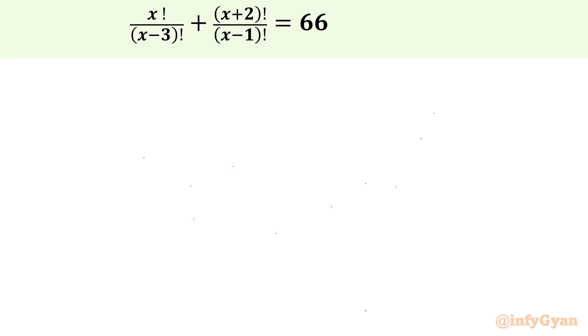The equation is x factorial over x minus 3 factorial plus x plus 2 factorial over x minus 1 factorial equal to 66.